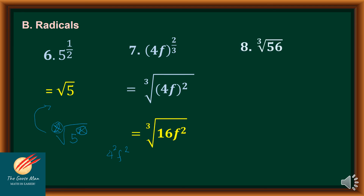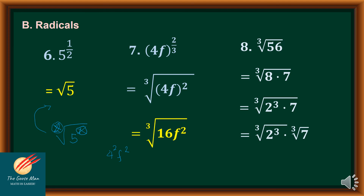Next, if I have the cube root of 56, I factor out 56 as the cube root of 8 times 7. Since 8 can be expressed as 2 to the 3rd power, I separate this as the cube root of 2 cubed times the cube root of 7. Writing cube root of 2 cubed in exponential form gives 2 raised to 3 over 3, and I can factor out 3, giving 2 raised to 1, or simply 2. We cannot simplify the cube root of 7, so the final answer is 2 times the cube root of 7.